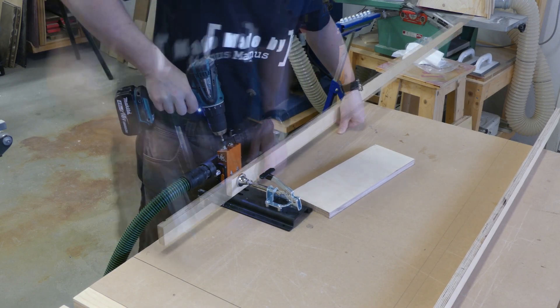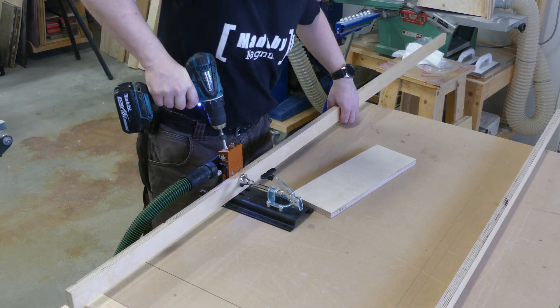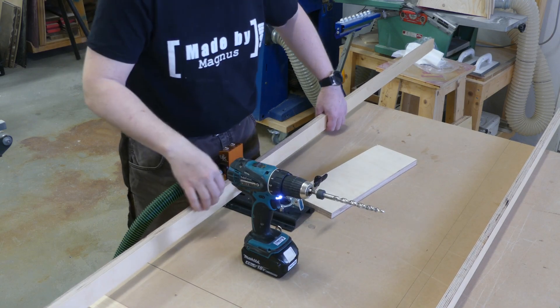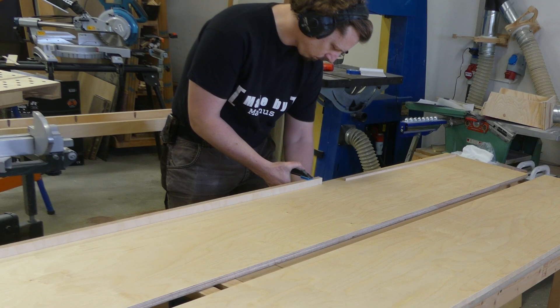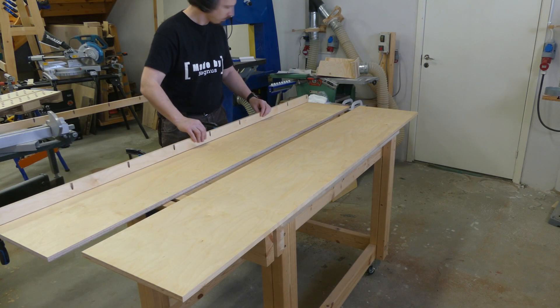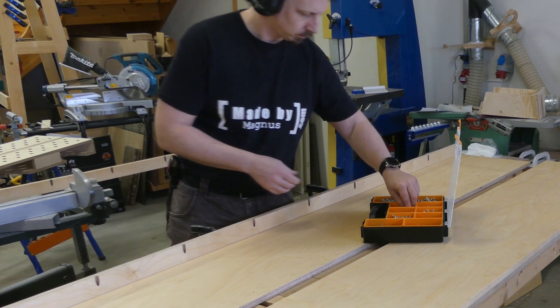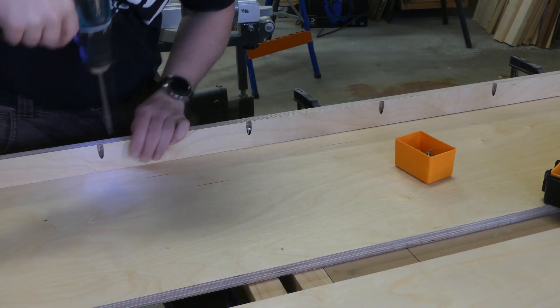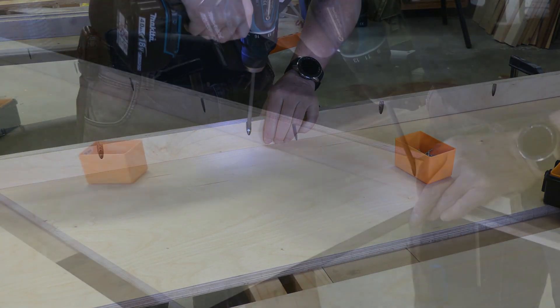Last but not least I made some pocket holes in the base in order to attach it under the bottom shelf. I used some scrap pieces as spacers to get an even overhang. And attach with all the screws. This will be plenty strong enough for this application.